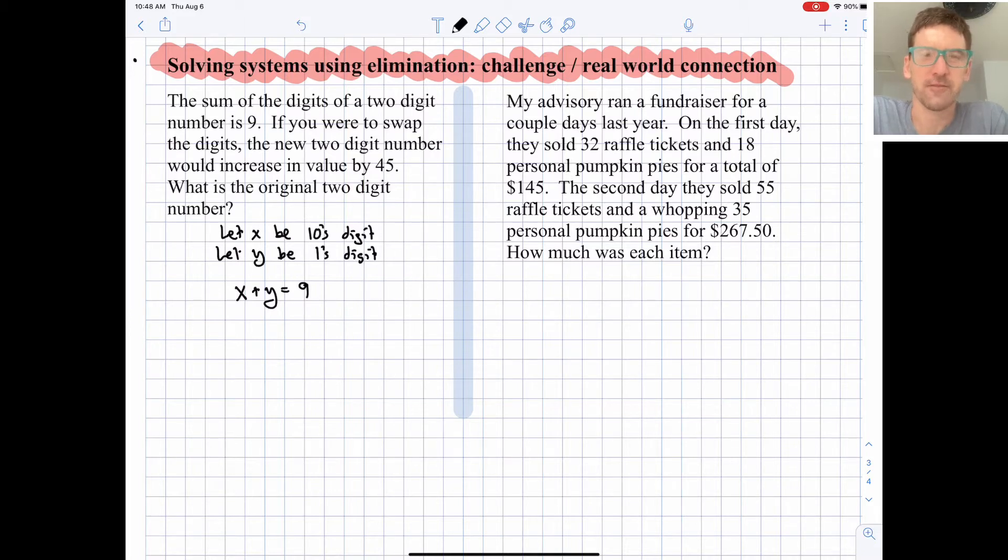But that doesn't mean that the value of the number x, y, when we write it out as a two-digit number is 9. That is probably going to be, well, 9 is a one-digit number, right? So x, y is going to be some other two-digit number. If we were to swap the digits, the new two-digit number has a larger value.